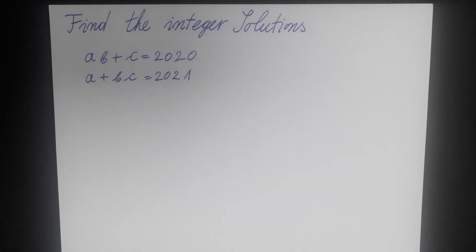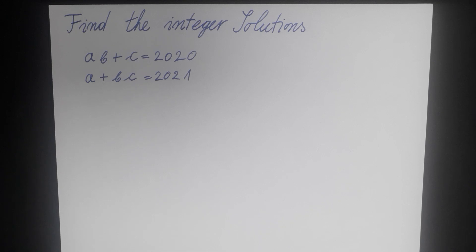In today's video I will show you how to solve this problem. As you can see, we have a problem of two equations with three variables. If you take a look at these two equations, on the right side of them we have the numbers 2020 and 2021.